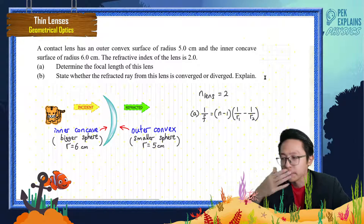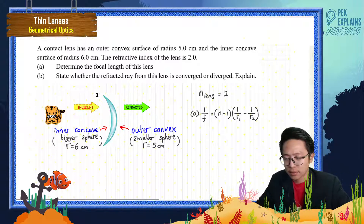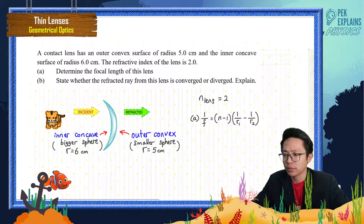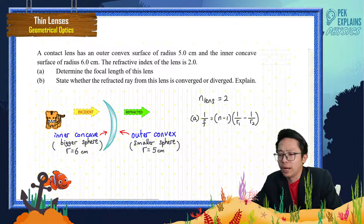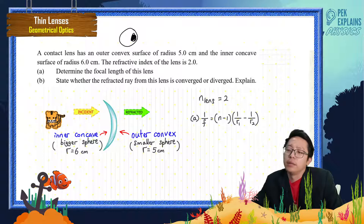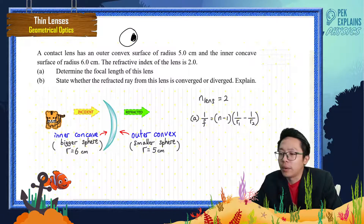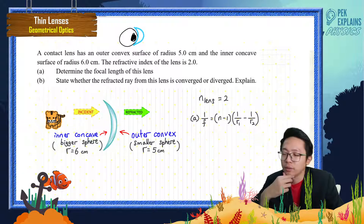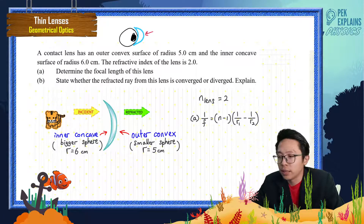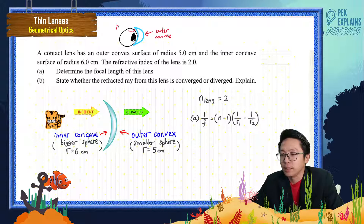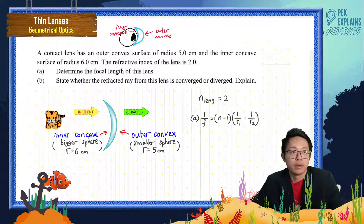First of all, what is the shape of this lens? Since no diagram is given, we can imagine a contact lens sitting on our eye. The lens shape is like a convex meniscus — it has an outer convex surface on one side and an inner concave surface on the other side.